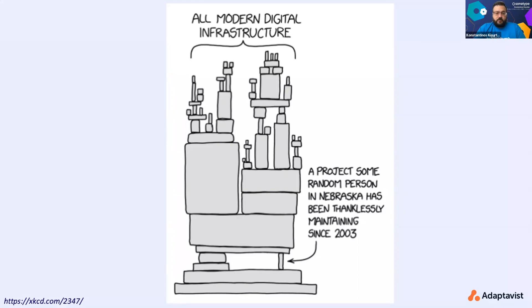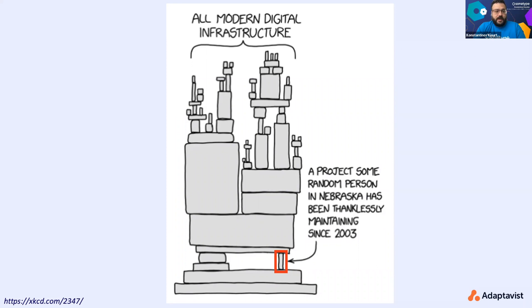The picture you see on your screens might be familiar — it's from a webcomic, and the reason it's so popular is because of how accurate it is. This is your modern digital infrastructure. Everything is sitting on that one component being maintained by someone in Nebraska or somewhere in the world in their bedroom or garage. If that component suddenly disappears, there will be chaos. Our experience has shown that around 90% of applications out there are using open source components.